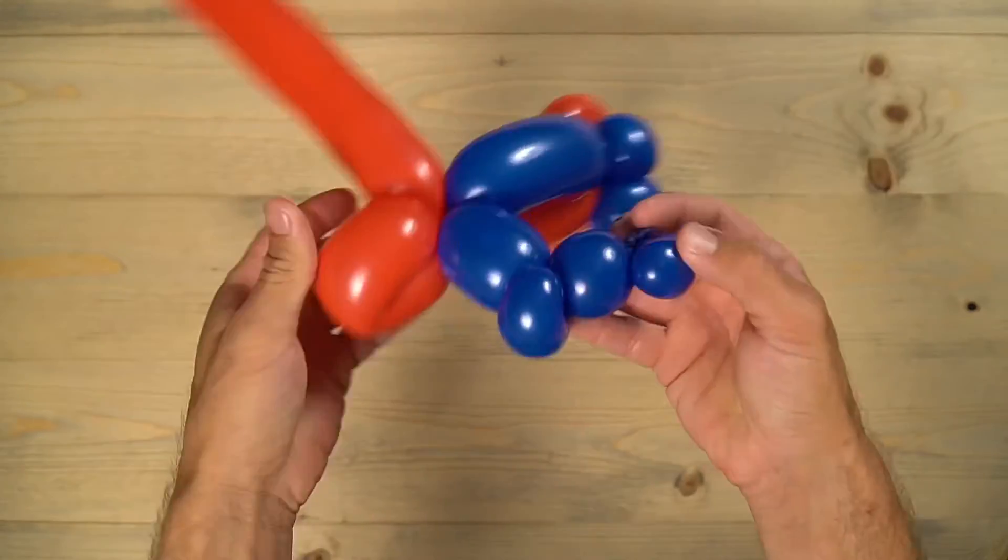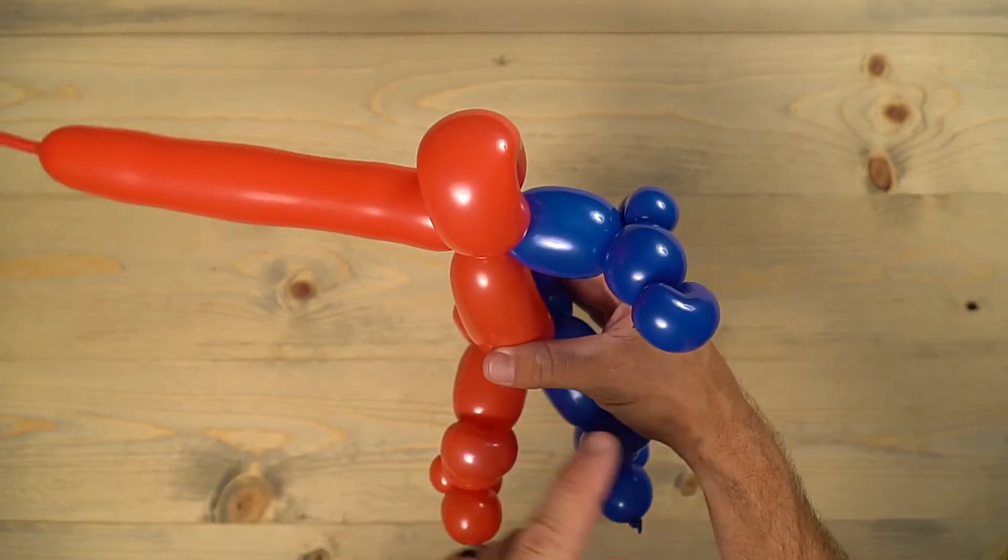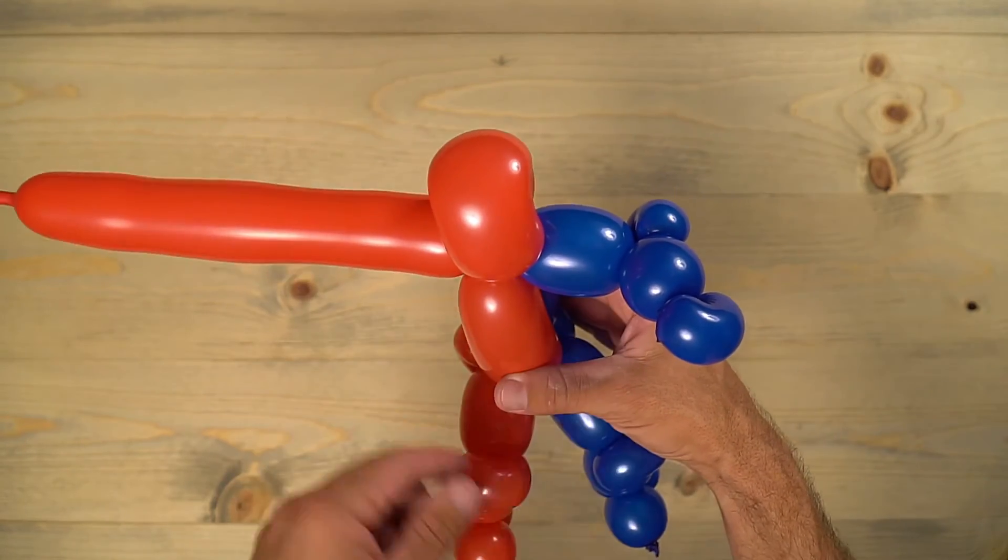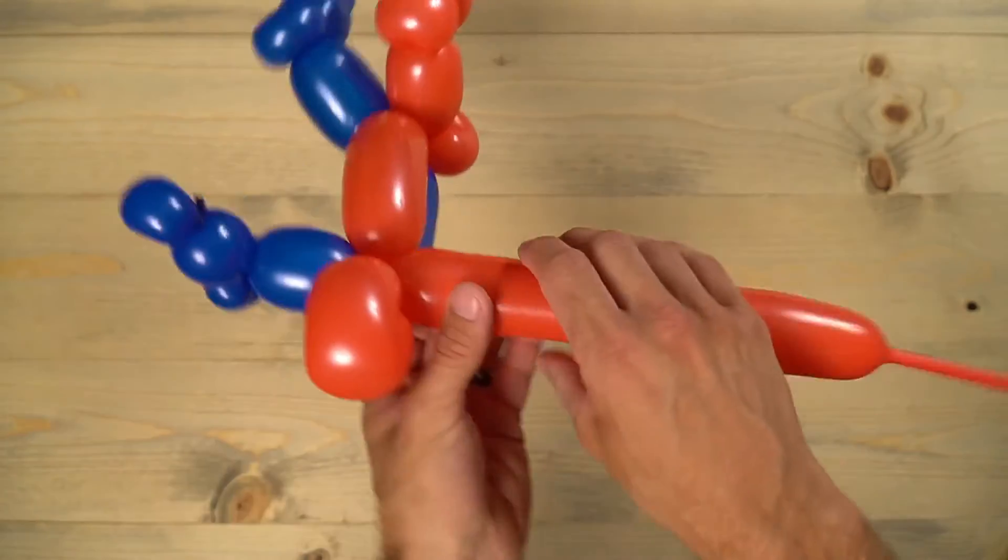Now you're going to do the same exact thing on the red arm there as the blue one. I just like to take a look at the blue one as I'm doing it, so I get the same exact sizes.